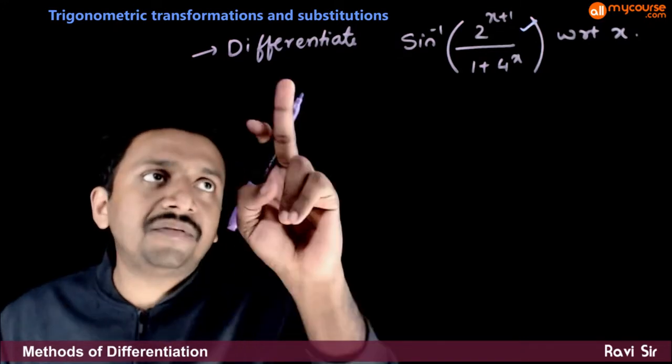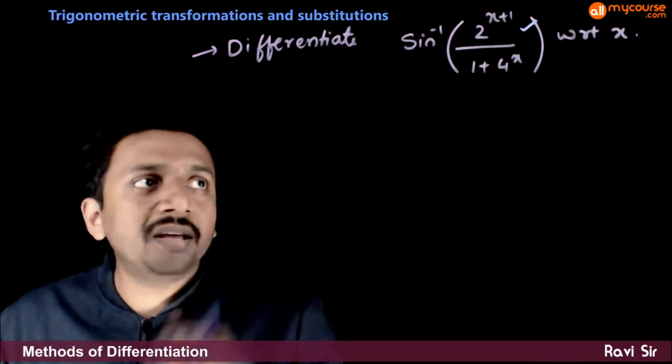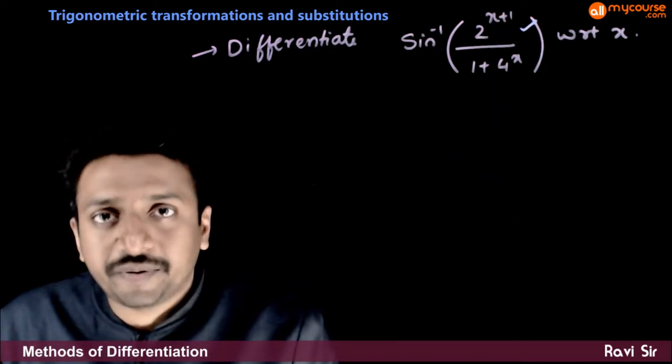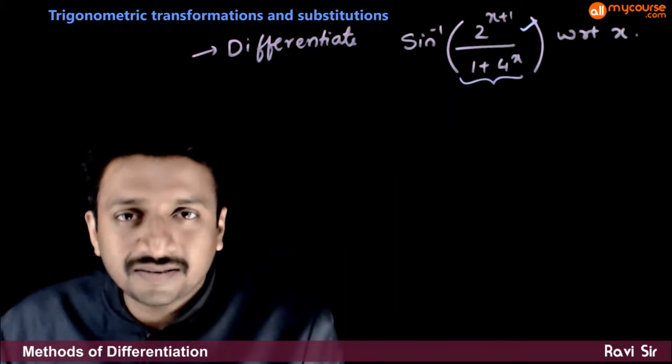In this question, you are asked to differentiate sine inverse of 2 power x plus 1 by 1 plus 4 power x with respect to x. So, first let us try to simplify this using some substitutions.